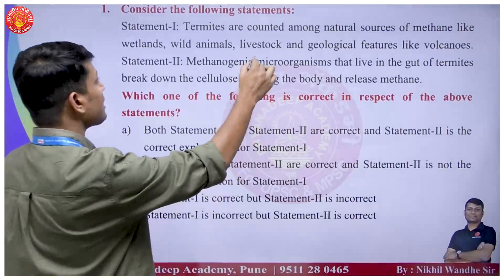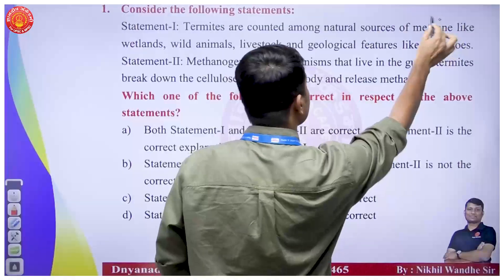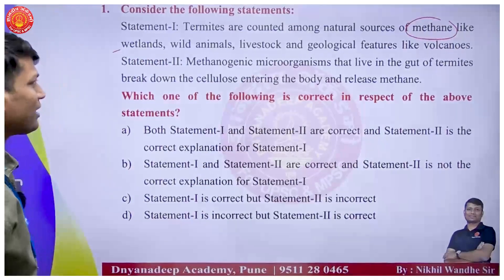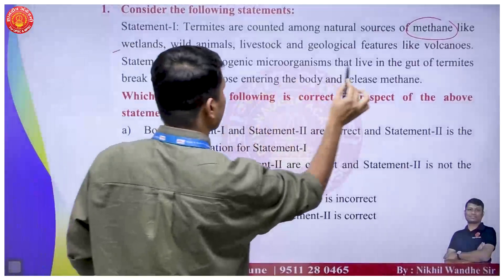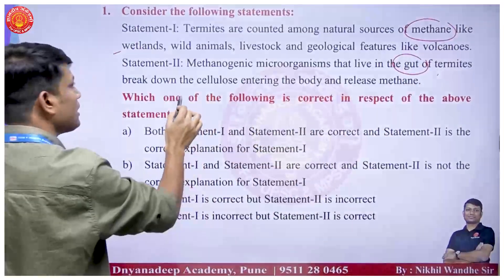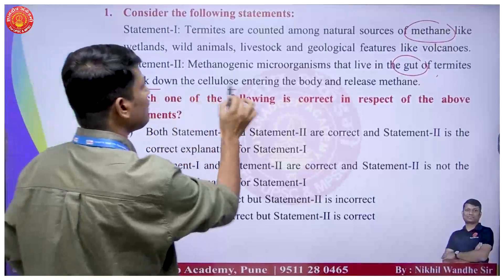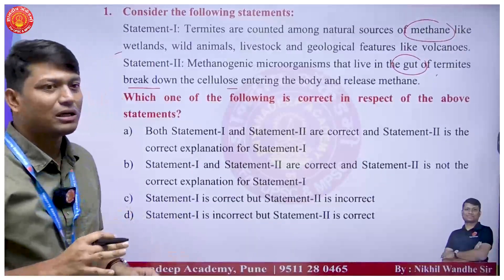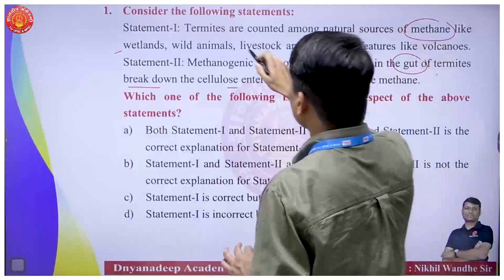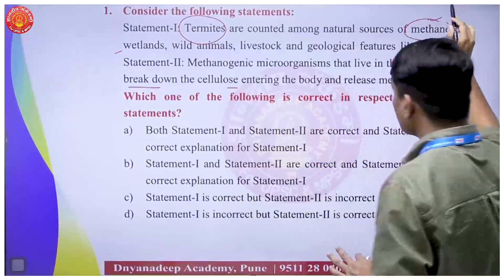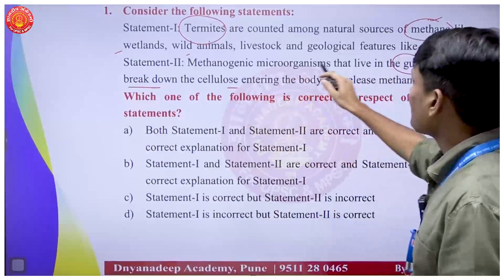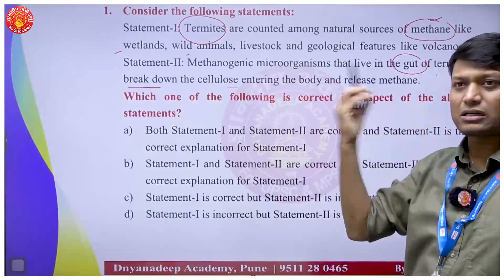Question 2: Termites are counted among natural sources of methane, like wetlands, and methanogenic microorganisms live in the gut of termites, break down the cellulose entering the body, and release methane. The question tests whether termites are a source of methane, and the second statement is simply a complement to the first.